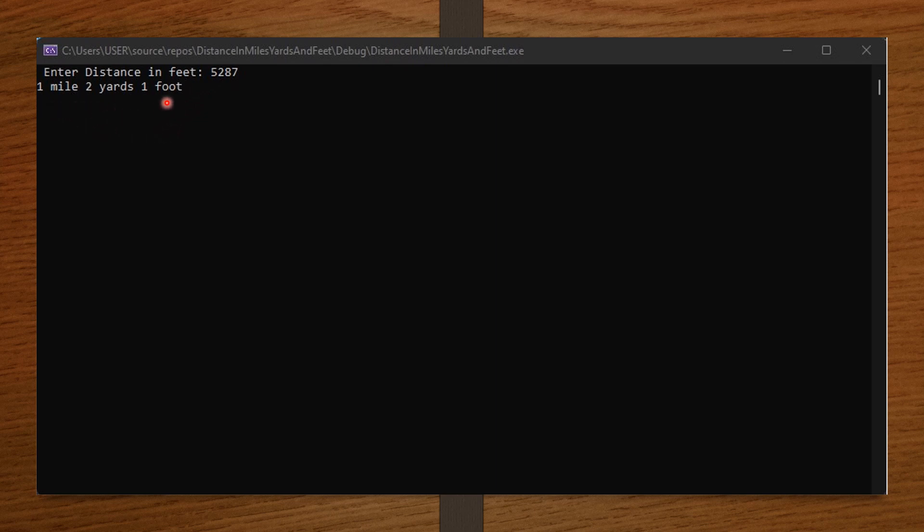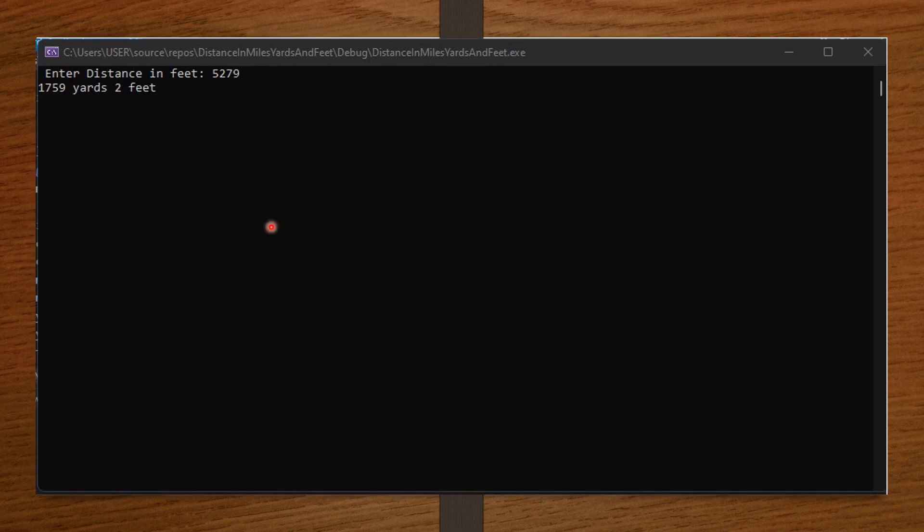So, if I convert 1 mile to feet, 2 yards to feet, and I add the 1 foot, I am going to get 5287, which is correct, which means our code is running properly. Running the code again, enter distance in feet, I entered via my keyboard 5279, and it displayed 1759 yards, 2 feet. So, you can see that miles was not displayed, because miles was 0. So, our code is again running properly.